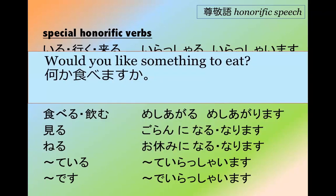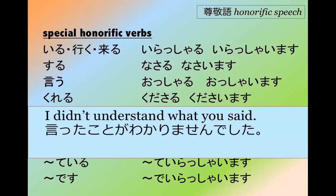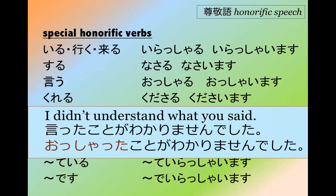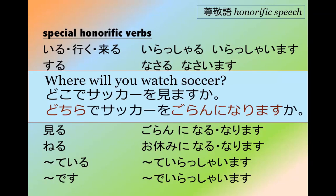'Would you like something to eat?' — neutral polite would be Nanika tabemasu ka? In honorific, taberu becomes meshiagaru, so: Nanika meshiagarimasu ka? For 'I didn't understand what you said' — wakarimasen deshita — the verb itta must be changed to the honorific osshatta, giving: Osshatta koto ga wakarimasen deshita. For 'Where will you watch soccer?' — Doko de sakka wo mimasu ka? becomes Dochira de sakka wo goran ni narimasu ka?